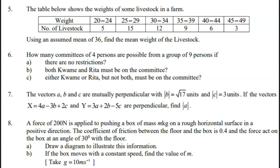Number 6: How many committees of four persons are possible from a group of nine persons if A, there are no restrictions, B, both Kwame and Rita must be on the committee?